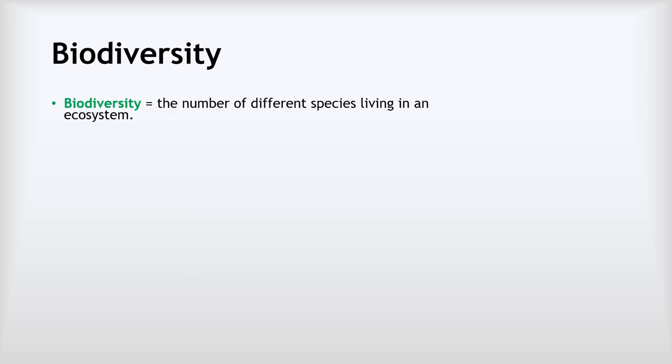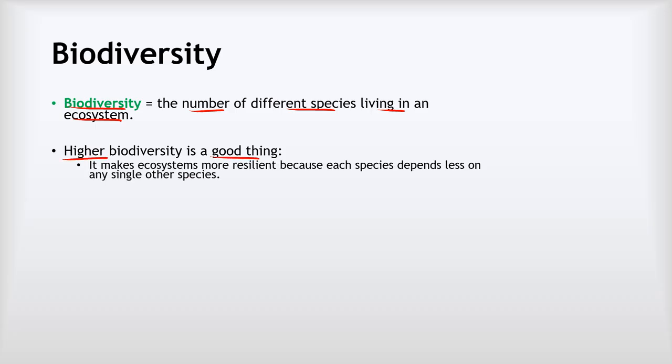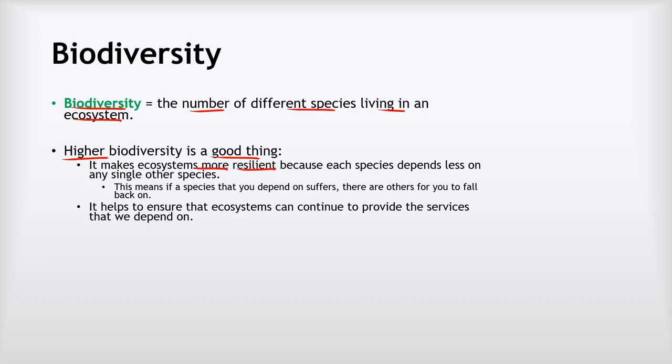Biodiversity broadly speaking is about the number of different species living in an ecosystem, and really importantly, higher biodiversity is a good thing. The reason why is because it makes ecosystems more resilient because each species depends less on any one species. What that means is if a species that you depend on suffers, there are others for you to fall back on.